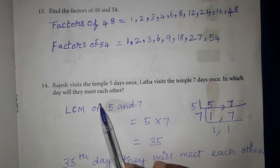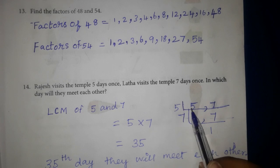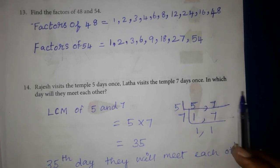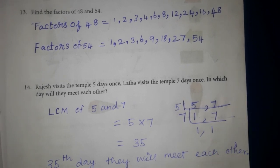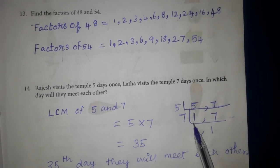Then we will do LCM. LCM is easy to do. First 5 and 7 put in the table. There's no common table. 5 and 7 have no common table. So first number is 5. 5 table 5 times 1.